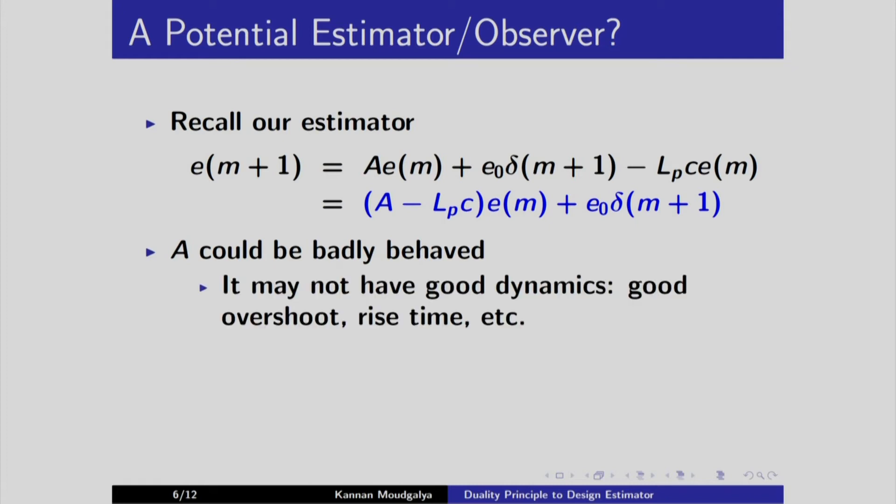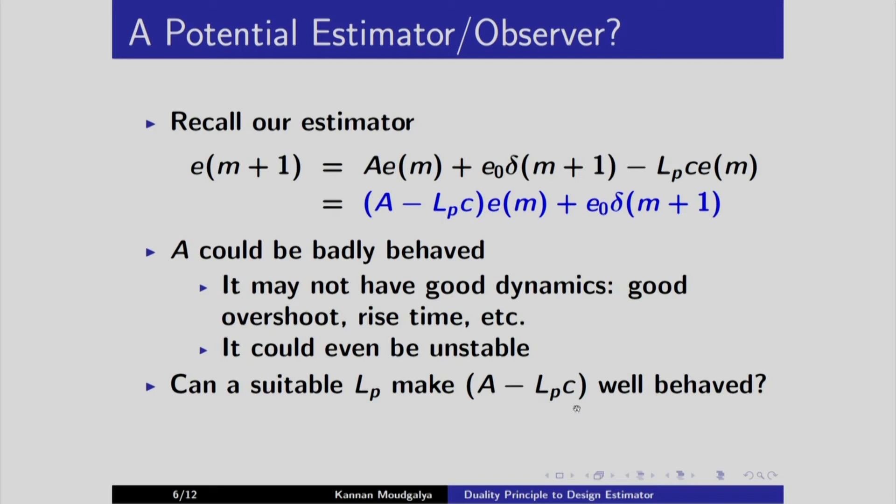We already discussed that A could be badly behaved. It may not have good dynamics, good overshoot, rise time, etc. It could even be unstable. Can a suitable Lp make A minus Lpc better behaved? Doesn't it look like the pole placement problem?